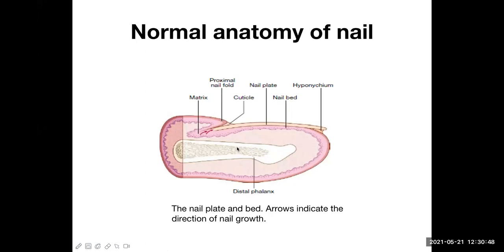This is the normal anatomy of the nail. There is a distal phalanx with bone at the center. This area is the dorsal matrix, and the nail bed is the ventral nail bed. The majority of the nail plate is synthesized by the dorsal matrix.